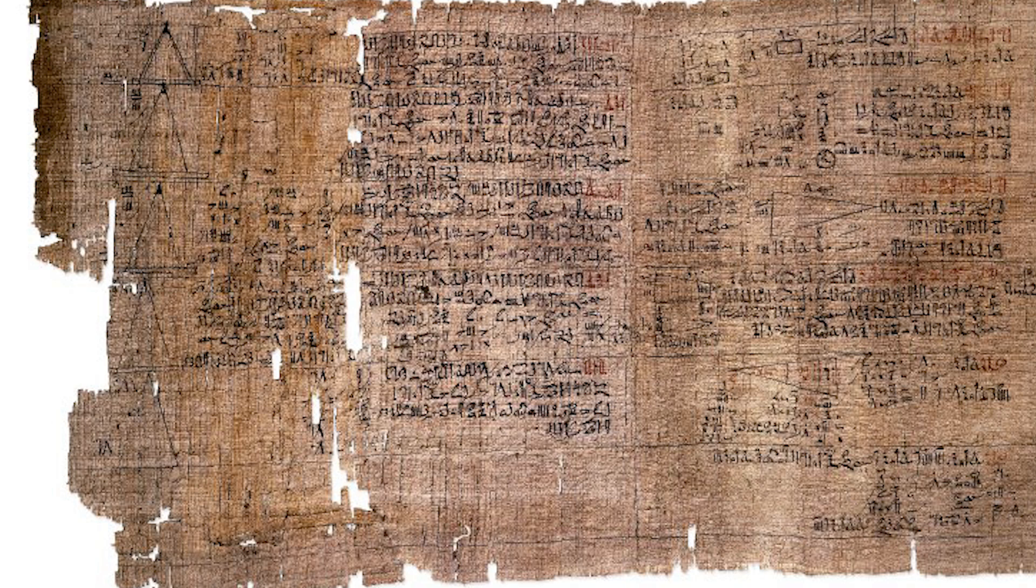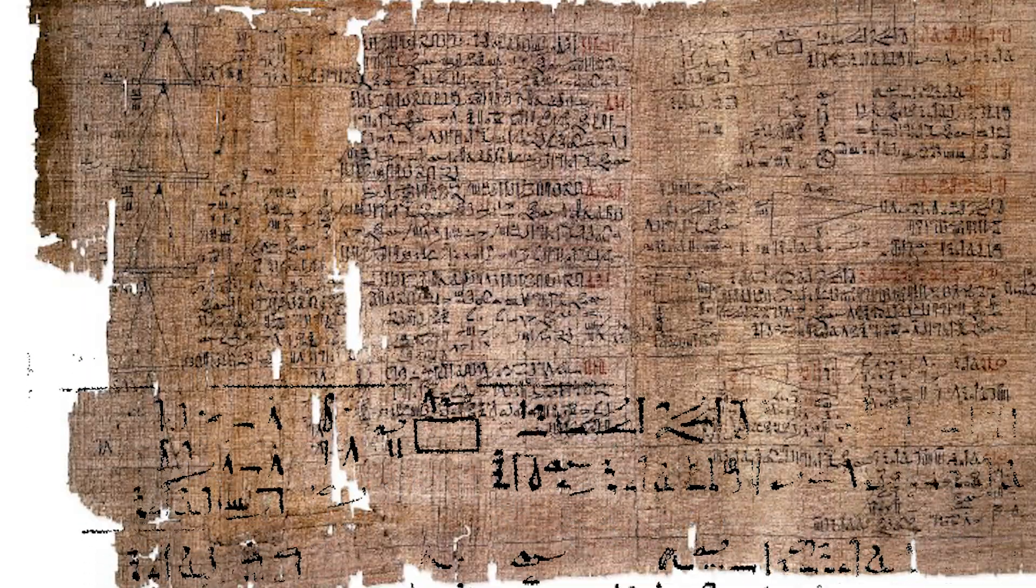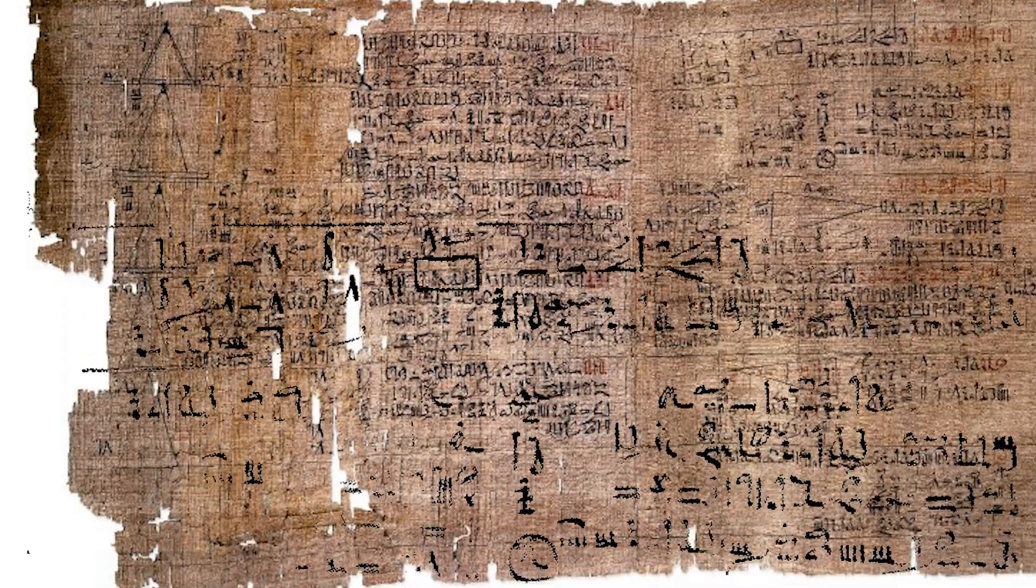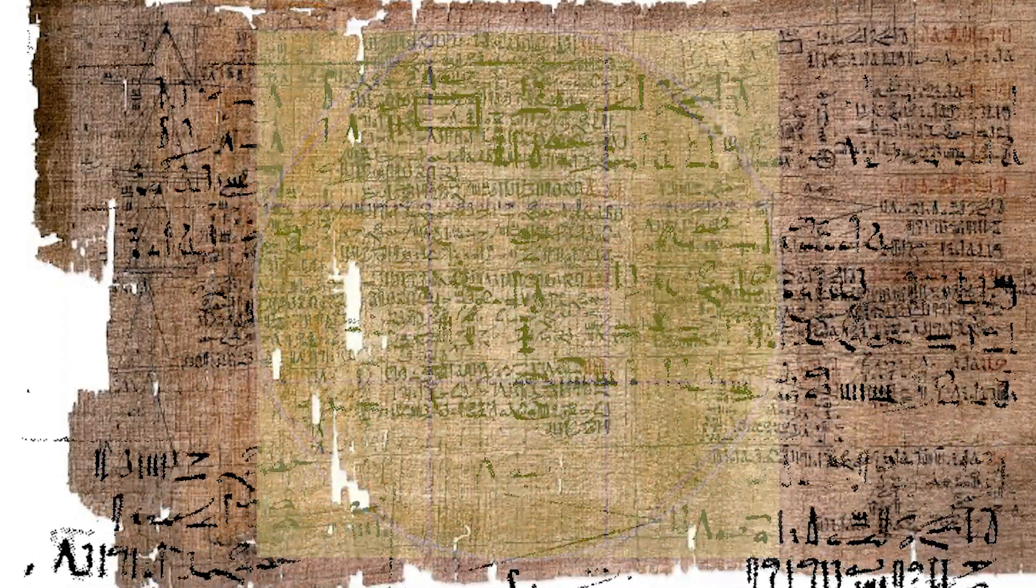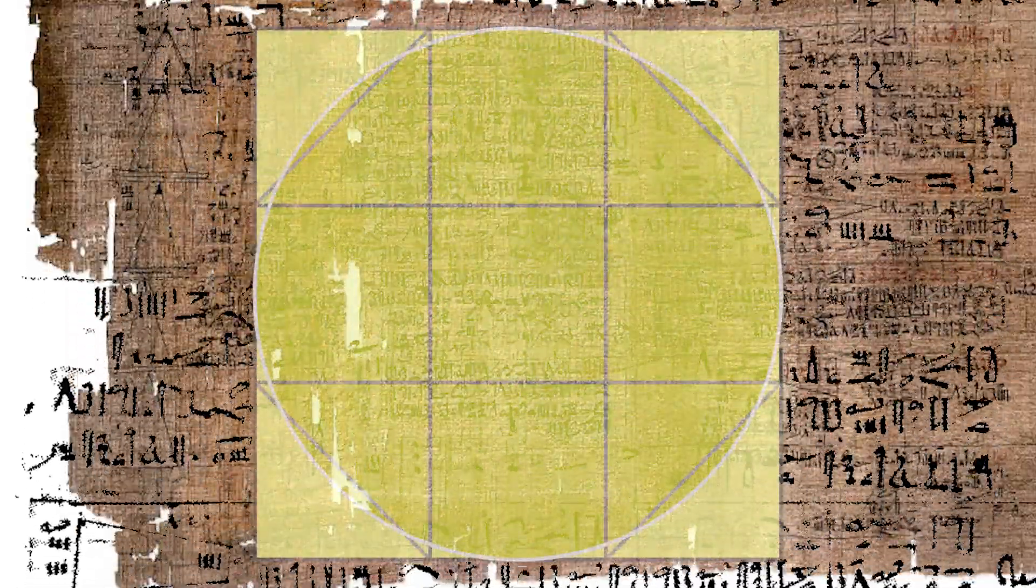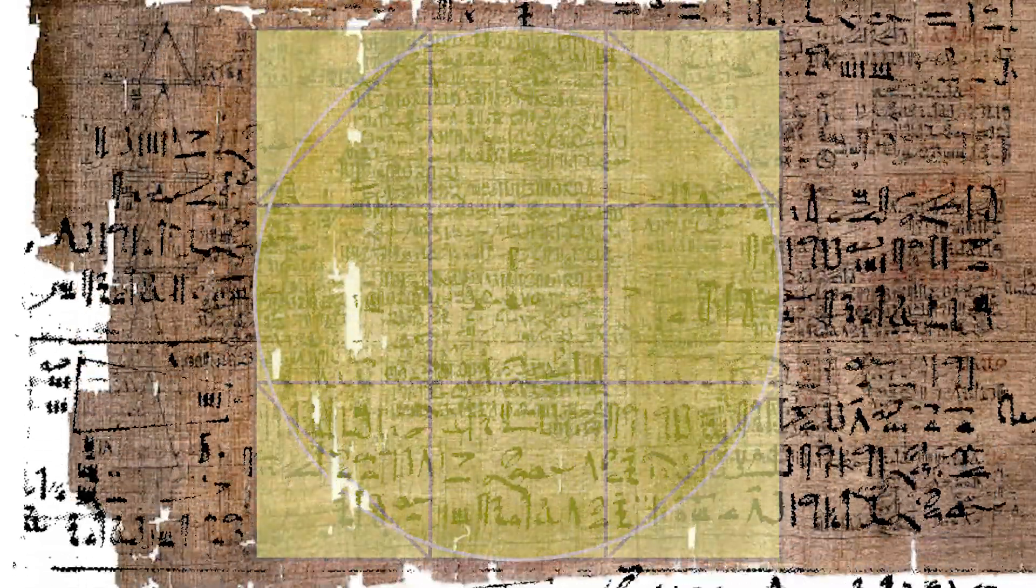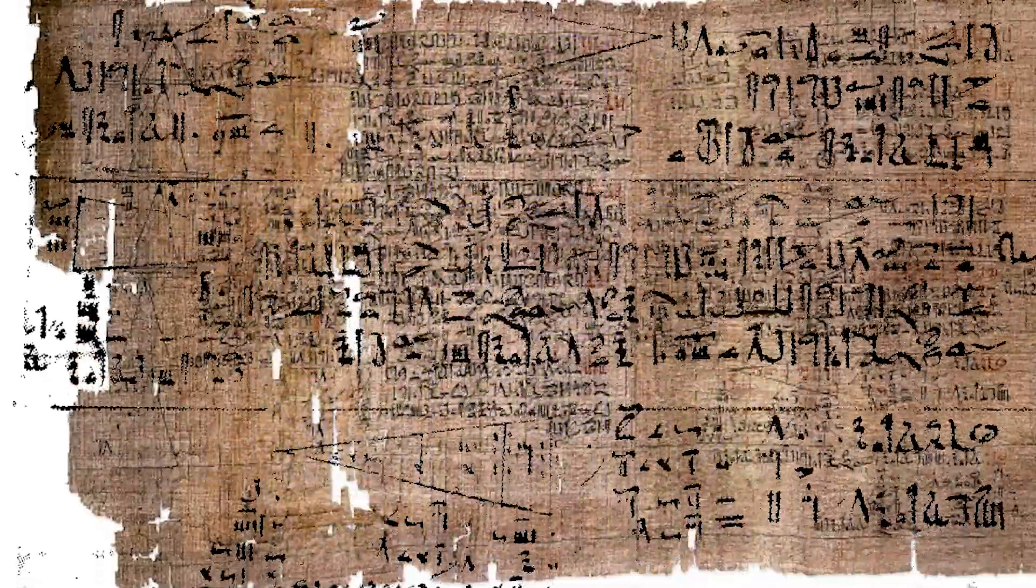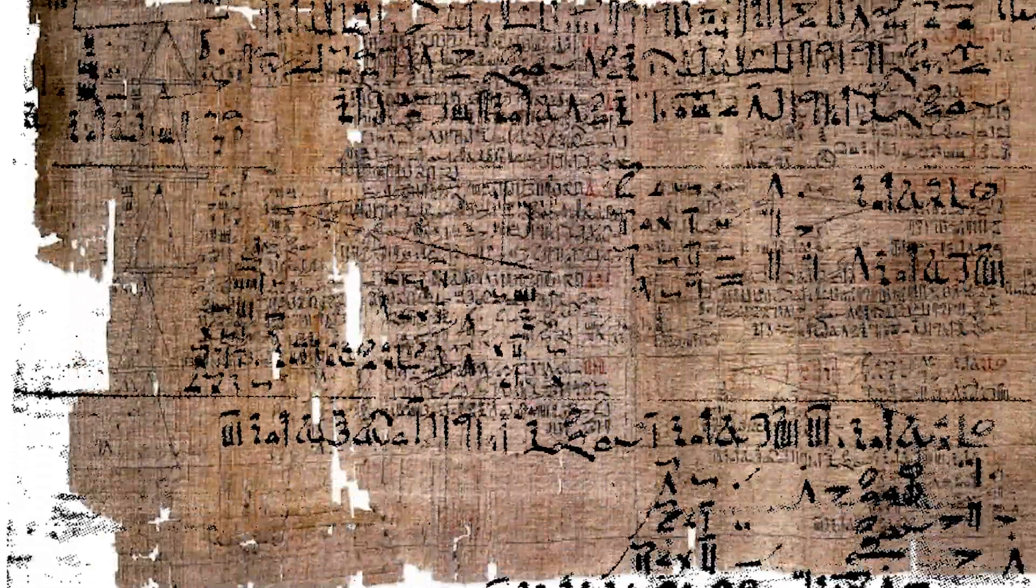And in fact, it would seem the Egyptians did know Pi. A mathematical document known as the Rhind Papyrus shows that the Egyptians were able to calculate the area of a circle by a formula that gave the approximate value of 3.1605 for Pi. Not perfect, but they did know of Pi.